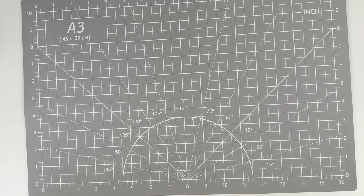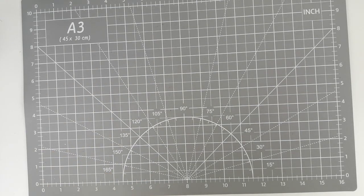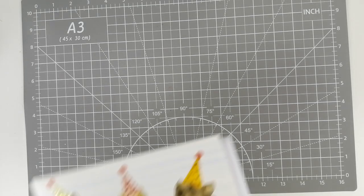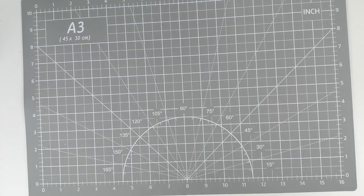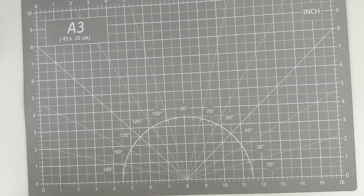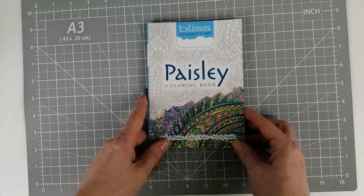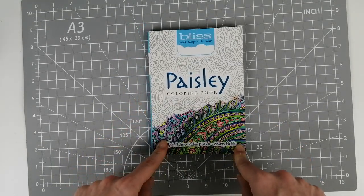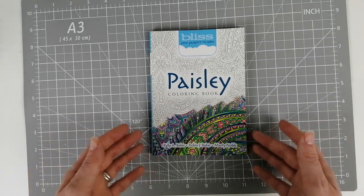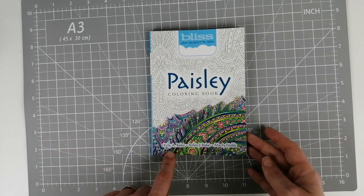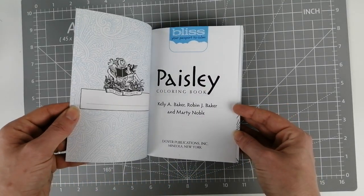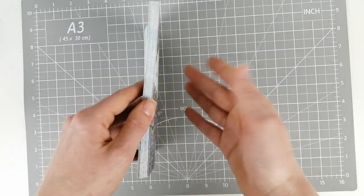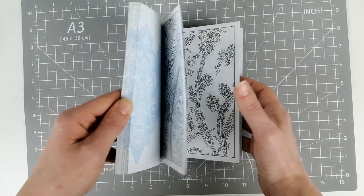She did send me a card—I'm going to show you the front of it just because it's really cute. She sent me a bulldogs card with French bulldogs on it. Not gonna name her because I don't have permission, but she sent me this cute little book. This is Bliss Your Passport to Calm Paisley Coloring Book by Kelly A. Baker, Robin J. Baker, and Marty Noble, and it is by Dover.